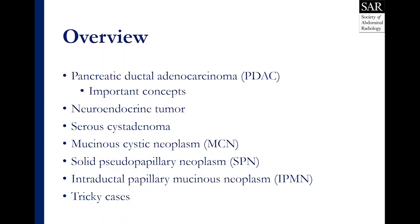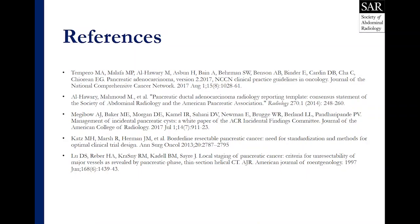To sum up, we've gone over a number of different lesions. The most common primary tumor in the pancreas is pancreatic ductal adenocarcinoma. We have resources available that describe the important concepts and how to evaluate and report those lesions. We also discussed neuroendocrine tumor, serous cystadenoma, mucinous cystic neoplasm, solid pseudopapillary neoplasm, intraductal papillary mucinous neoplasm, and a couple of tricky cases — focal autoimmune pancreatitis and intrapancreatic splenule. Here are a couple of very useful resources for your enjoyment. Thank you very much.